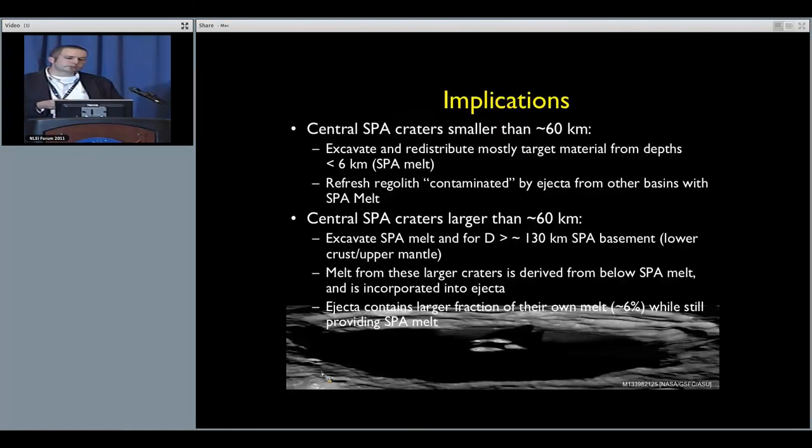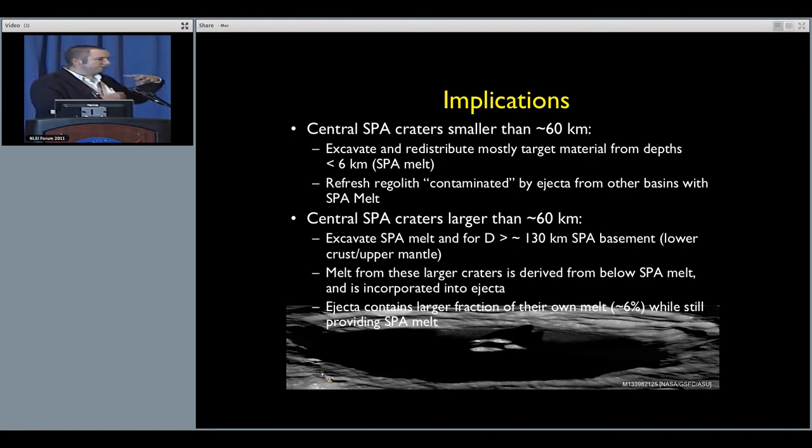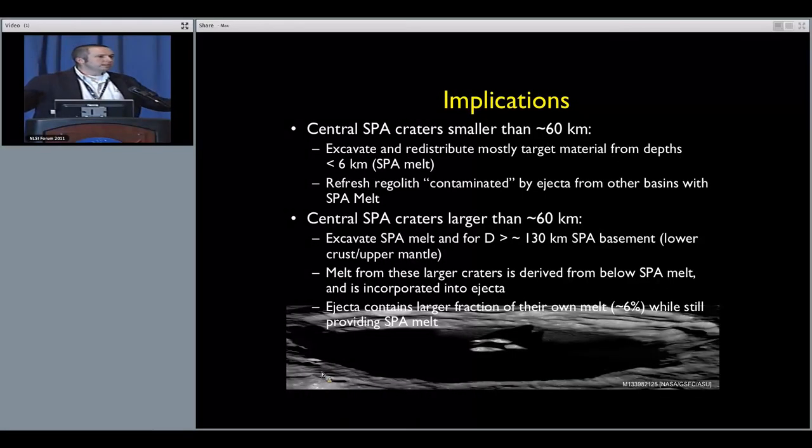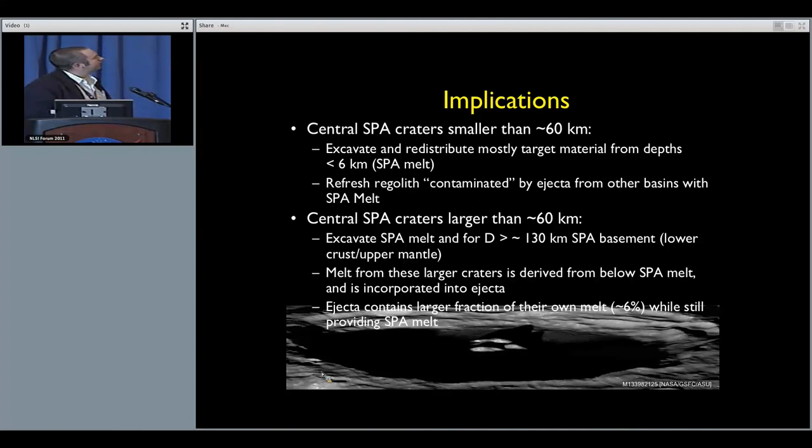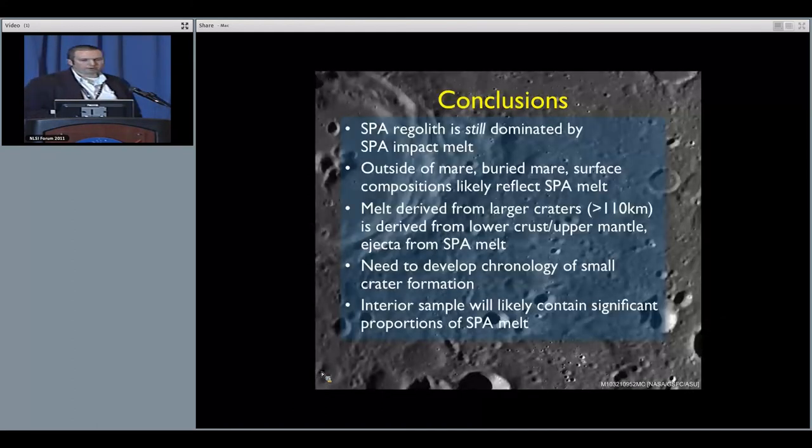Implications for smaller craters within SPA is that they're excavating and redistributing mostly the target material, SPA melt, from depths about less than six kilometers, and that these small craters are refreshing the surface. They're redistributing SPA melt material back onto the surface. Remember the M-cubed data, which shows that in general, most of the floor of the SPA is relatively homogenous in that the material is bringing back up this noritic component. Some of the larger craters, and there are a few, are going to be excavating both melt material and maybe basement material from greater depths. That material may reflect lower crust or upper mantle. Central craters in SPA are going to be incorporating this lower material. They'll be introducing their own melt while still introducing the SPA component.